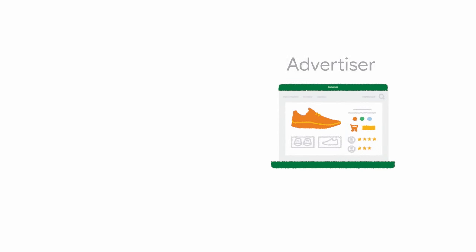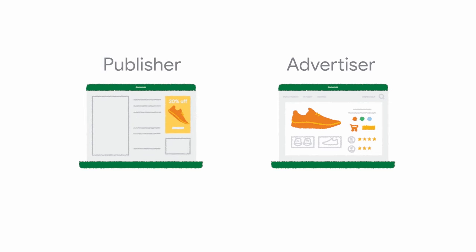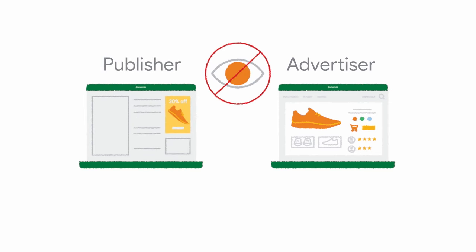In this example, the advertiser — the shoe store — doesn't learn what pages you're viewing, and the ad publisher — the news site — doesn't learn about your interest in running shoes.